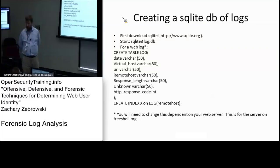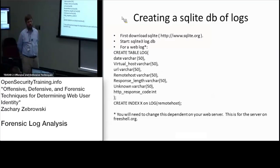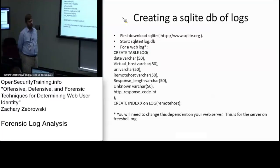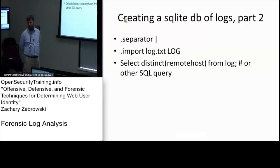You can create a table called 'log' which has a date, URL, remote host, and whatever other structure fits your particular log file. Then create an index on the column you think you'll be using most. In this case, the particular format has date, virtual host, URL, response length, an unknown field, and an HTTP response code — the format of the freeshell.org web server log. Using that table structure, you can specify a separator of a bar and import log.txt into the table log using SQLite, and it just works.